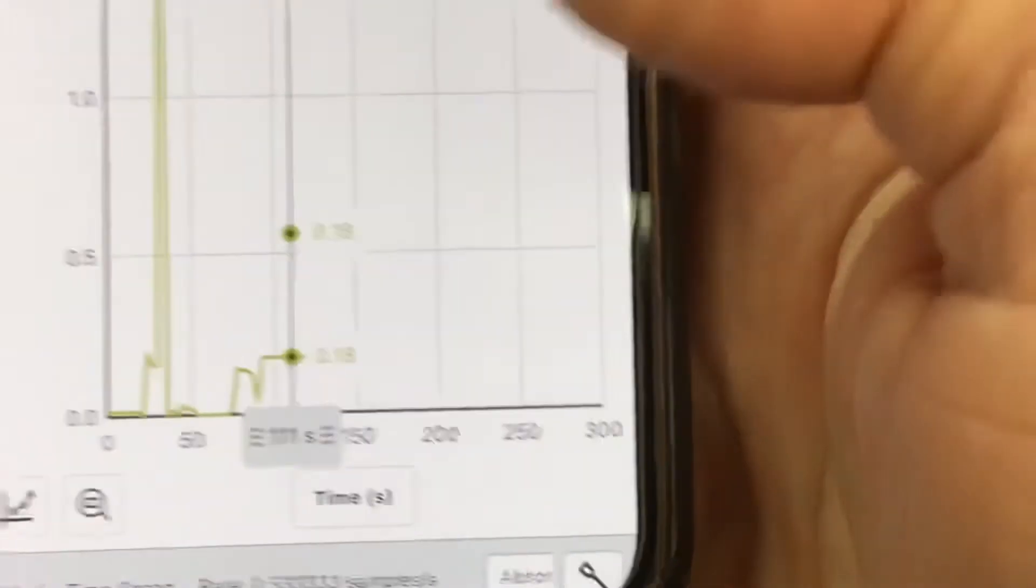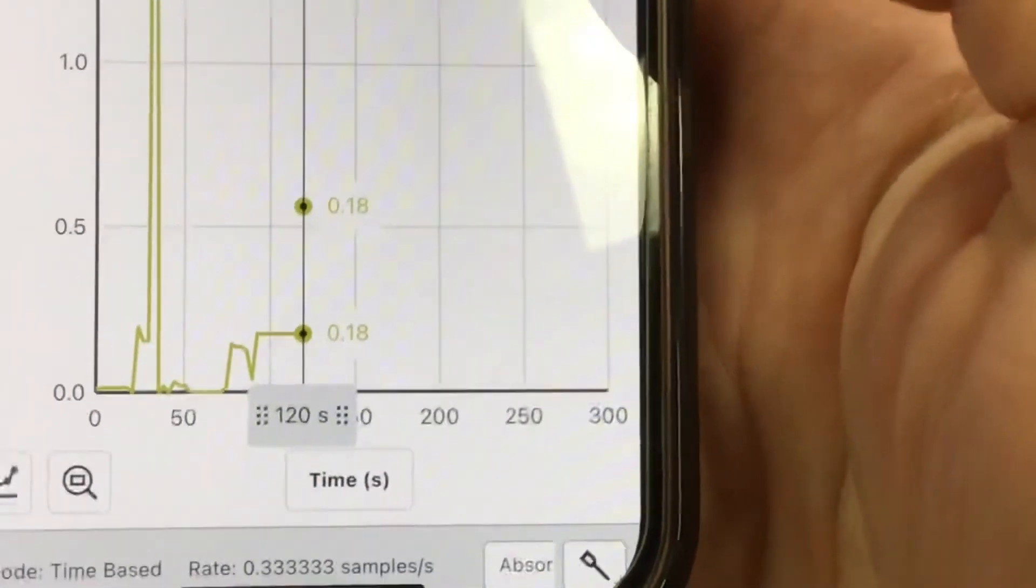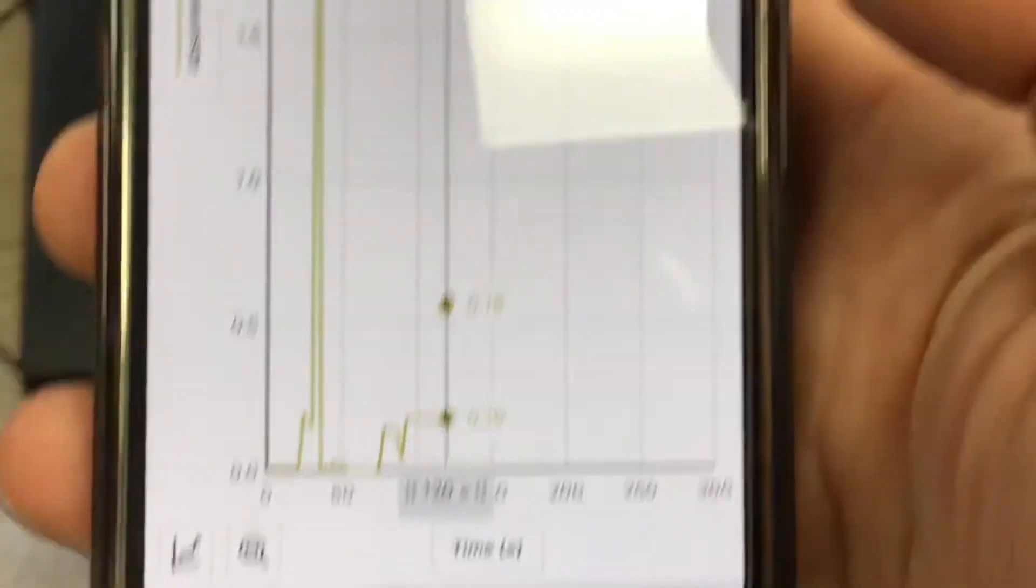And it shouldn't change over time. Right. The reaction's already at equilibrium. Yes. So we're good. Let me take 0.18 for trial one.